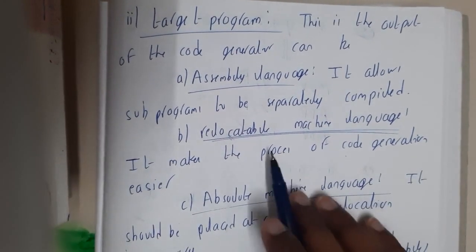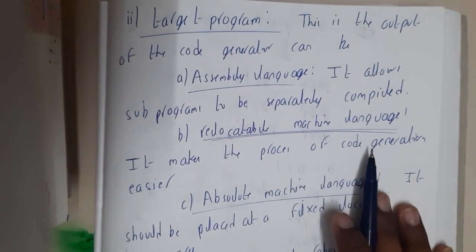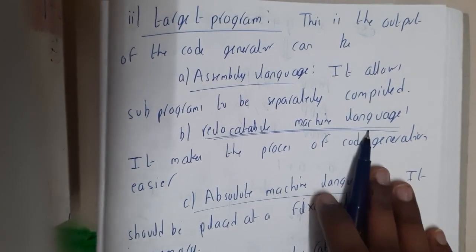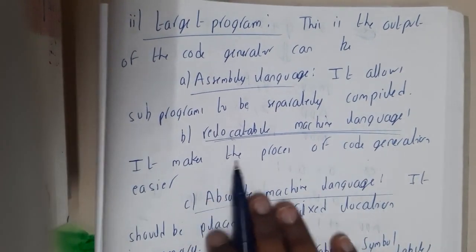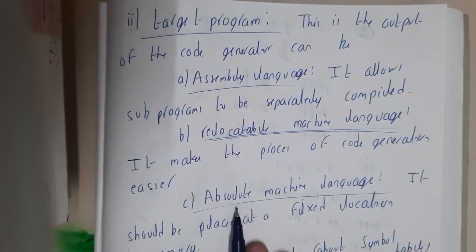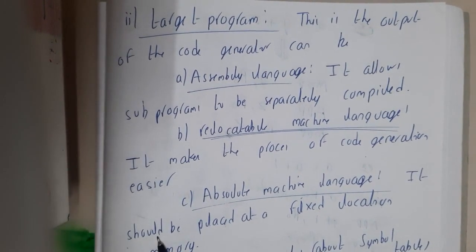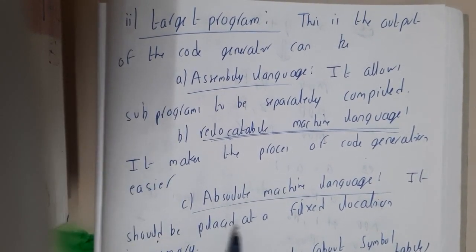Assembly language allows the sub program to be separately compiled. Relocatable machine language makes the process of code generation easier. The absolute machine language should be placed at a fixed location in the memory.